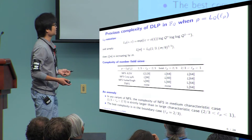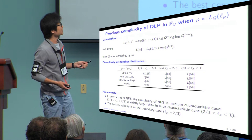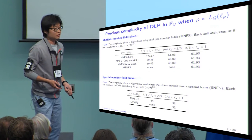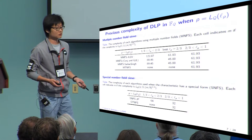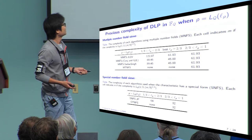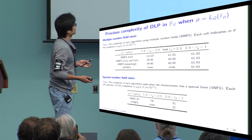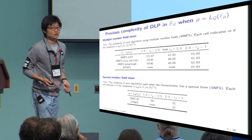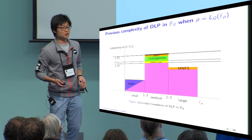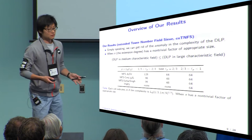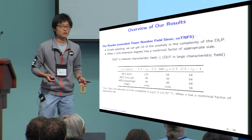Even more strangely, the best complexity of the NFS appeared in the boundary case. This phenomenon was the same for any variant, like multiple number field sieve or special number field sieve — the complexity of any variant in the medium case was larger than in the other cases. From this graph, one can see easily that medium characteristic is the hardest part in the DLP. So now we can state our result: simply speaking, we get rid of this anomaly in the complexity of DLP.